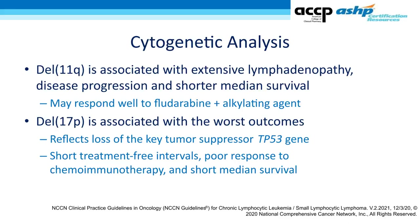We can also consider cytogenetic analysis to aid in therapy selection. Deletion 11q is associated with extensive lymphadenopathy, a more aggressive disease course, and shorter median survival, but it is very likely to respond to traditional chemotherapy agents such as fludarabine and alkylating agents. Deletion 17p is the worst of all cytogenetic markers in CLL — it is associated with loss of the tumor suppressor gene TP53, very short treatment-free intervals, poor response to traditional chemoimmunotherapy, and very short median survival.